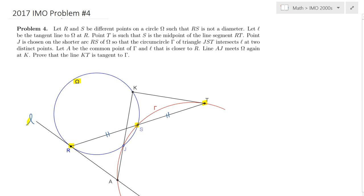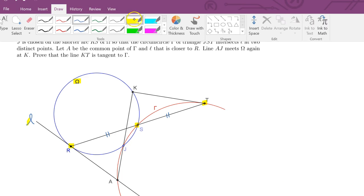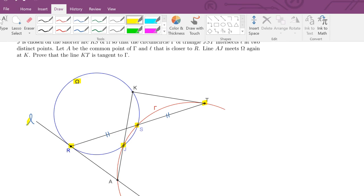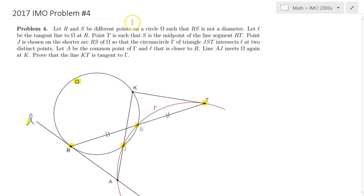We randomly pick a point J on the minor arc of RS on circle Omega, then draw the circumcircle of TSJ. That's the red circle which I labeled as gamma, as stated in the problem. Finally, this red circle is supposed to hit the tangent line L at a point A, and another point, but A is the closer one to point R.